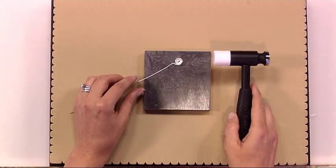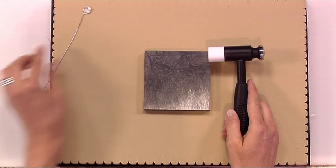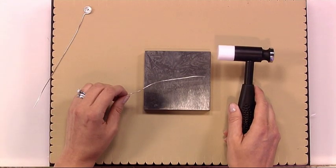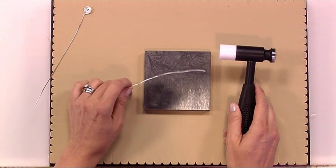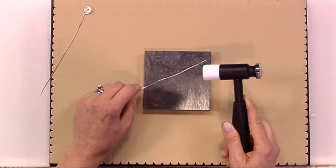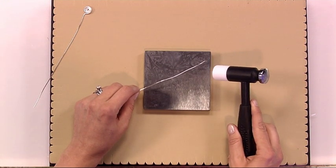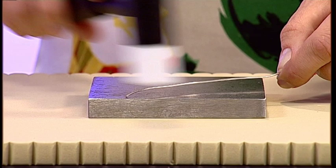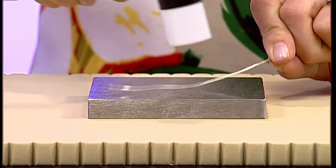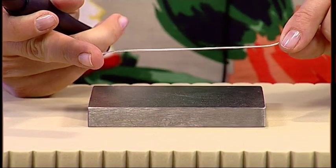I'm going to use the nylon head to demonstrate smoothing out and straightening wire that's got slightly wonky, and again use a gentle outward hammering motion like so.